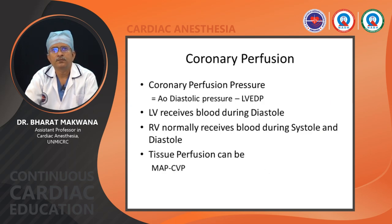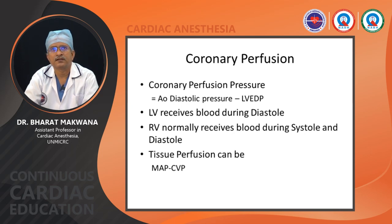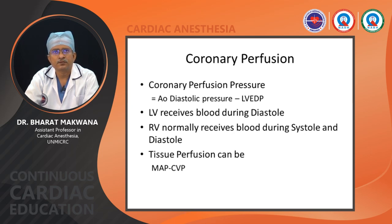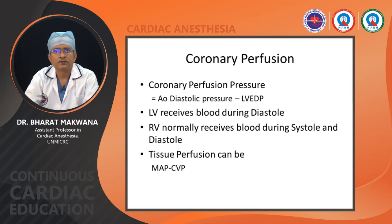The heart is supplied by two coronary arteries — left and right. The left has two branches: the LAD and circumflex. These three coronary arteries and the coronary vein draining into the coronary sinus to the right atrium complete the coronary circulation.